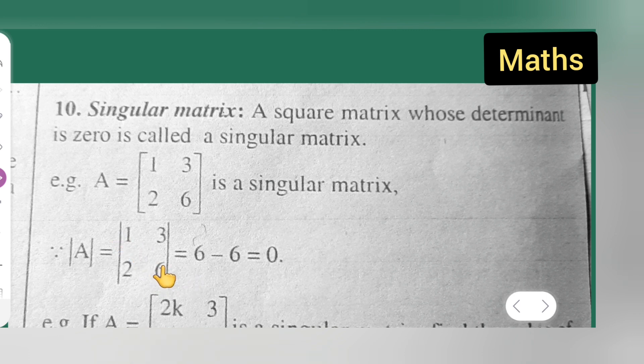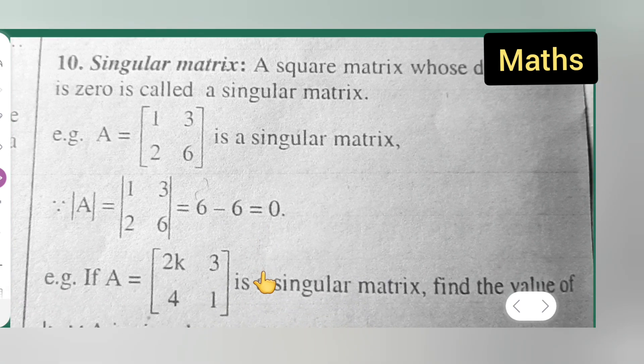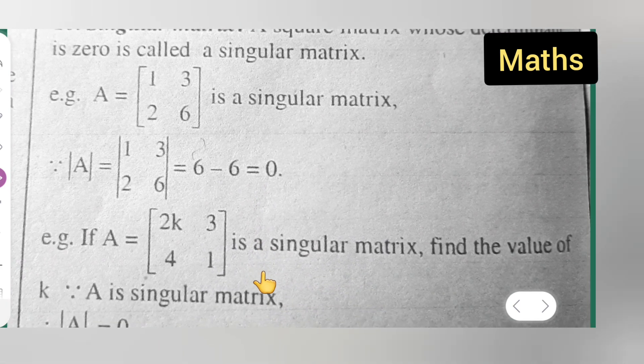Then when you multiply 1 with 6, you will get 6. Minus 2 × 3 is 6, which is equal to 0. 6 minus 6 is 0, right? Then let me take one more example with you all.